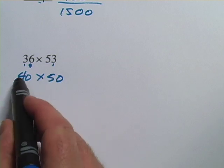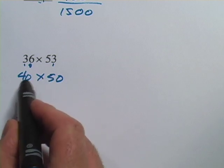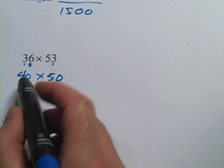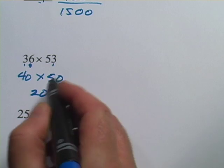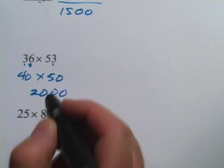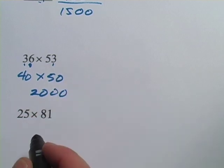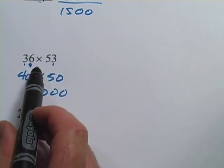When we're doing multiplication and you have a number like this with a zero after it and another number with a zero after it, you can multiply the numbers: 4 times 5 is 20, and then just put on the number of zeros that you sort of ignored in the first place. So 40 times 50 is 2,000, which is a pretty good estimate for 36 times 53.